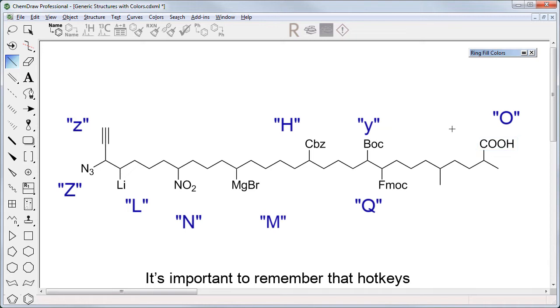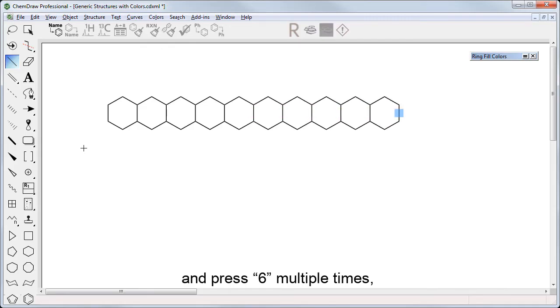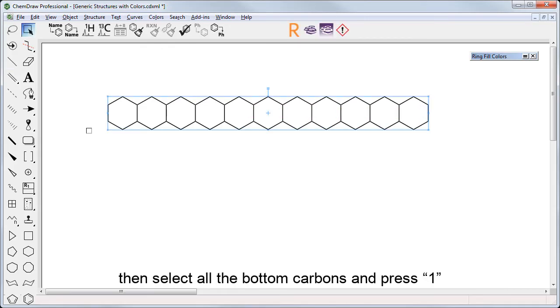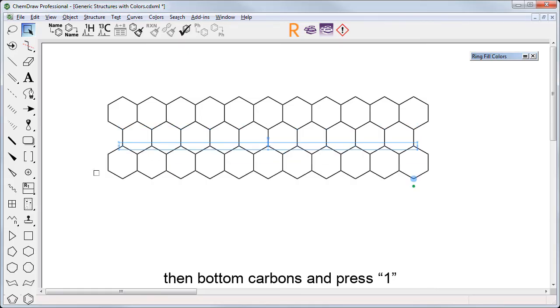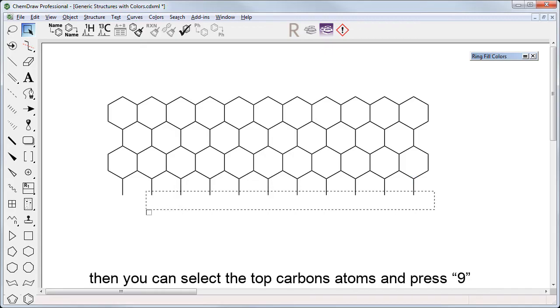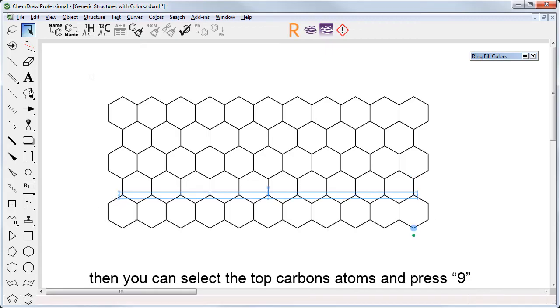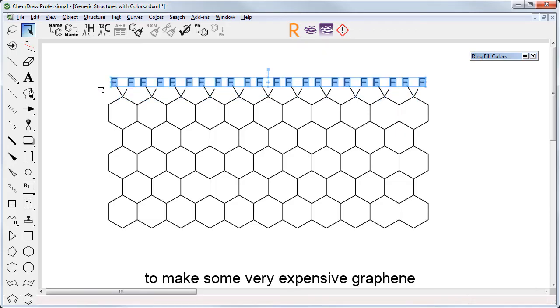It's important to remember that hotkeys can apply to an entire selection. Here I have positioned myself over a bond and pressed 6 multiple times, then select all the bottom carbons and press 1, then bottom carbons and press 6, bottom carbons press 1, bottom carbons press 6, then you can select the top carbons and press 9, and why not select the top carbons and press F to make some very expensive graphene.